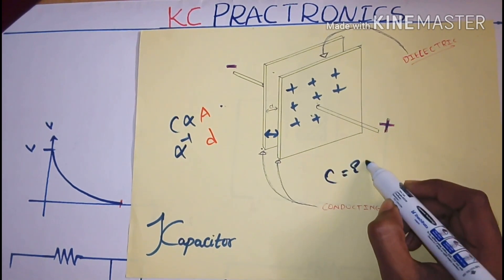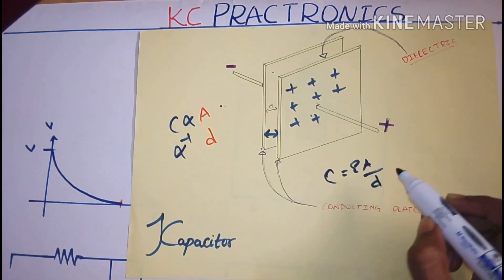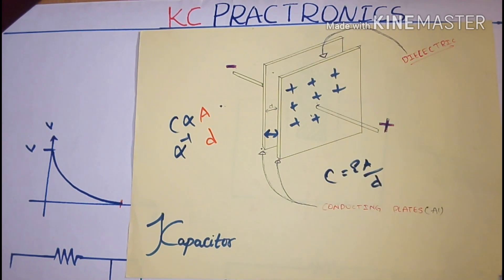And it is given as C equals epsilon A by D, where epsilon is the dielectric constant.